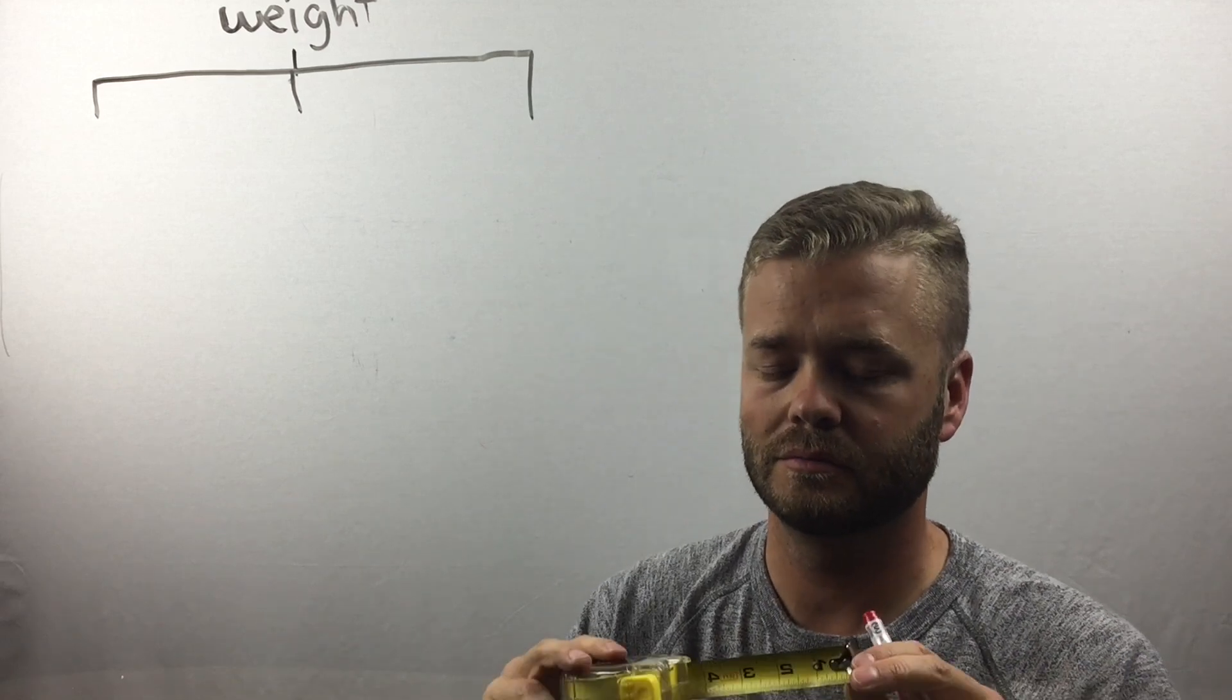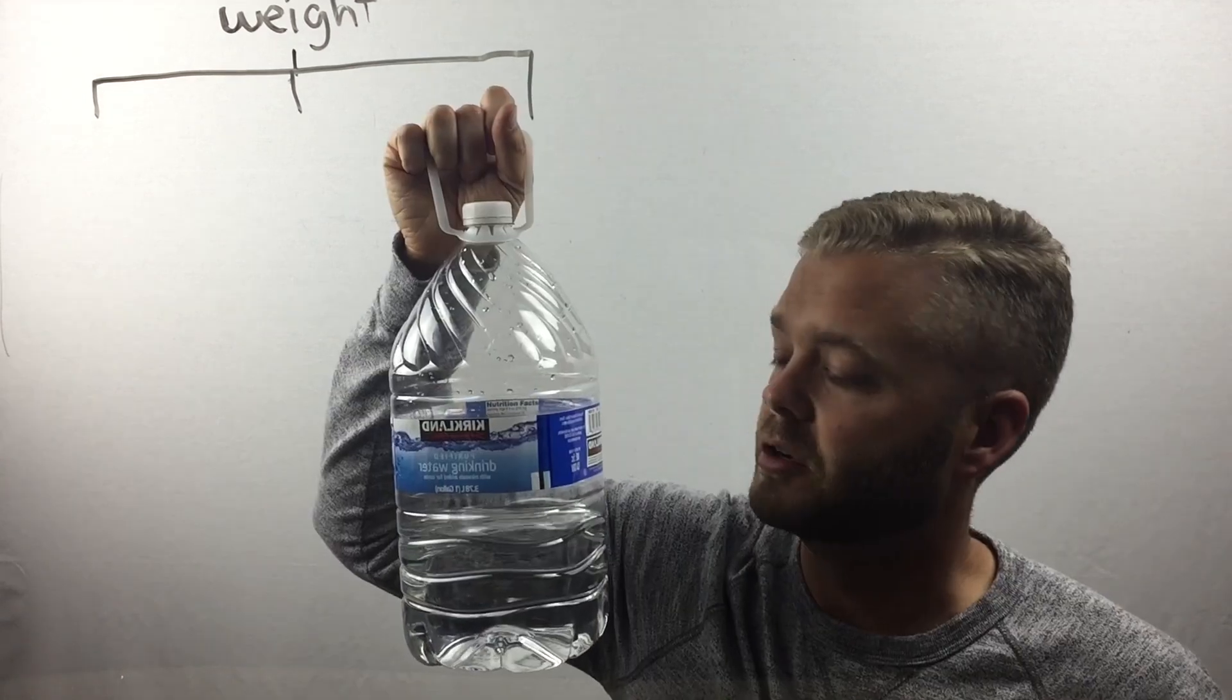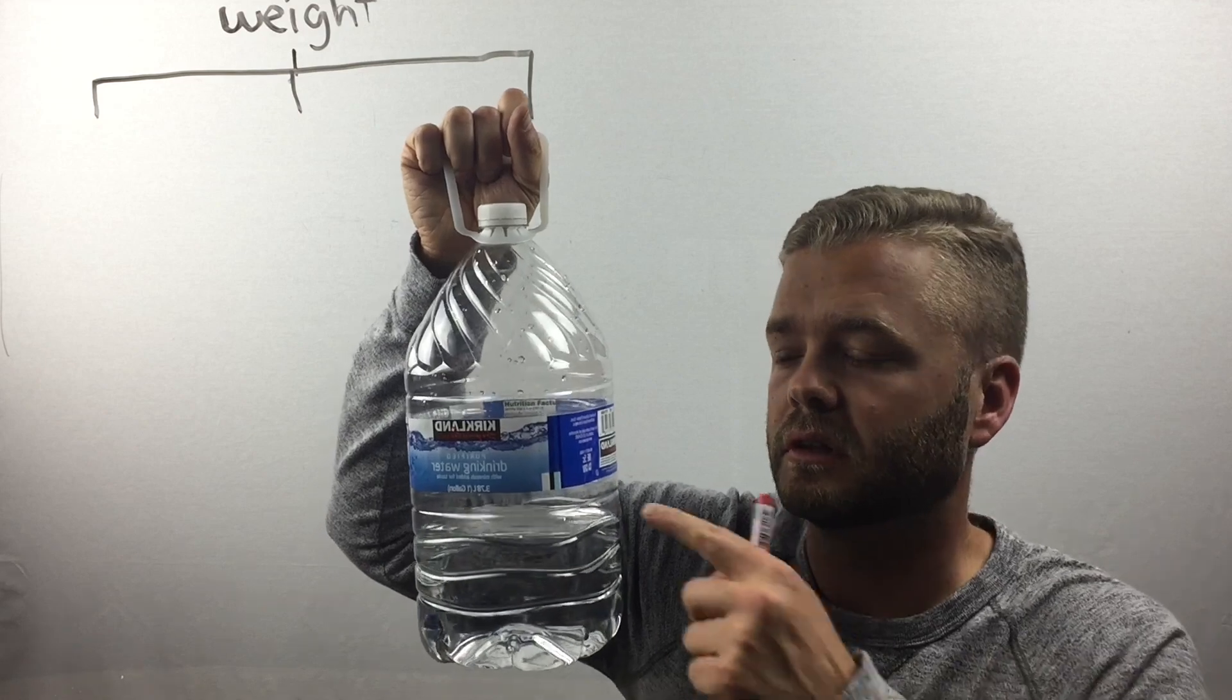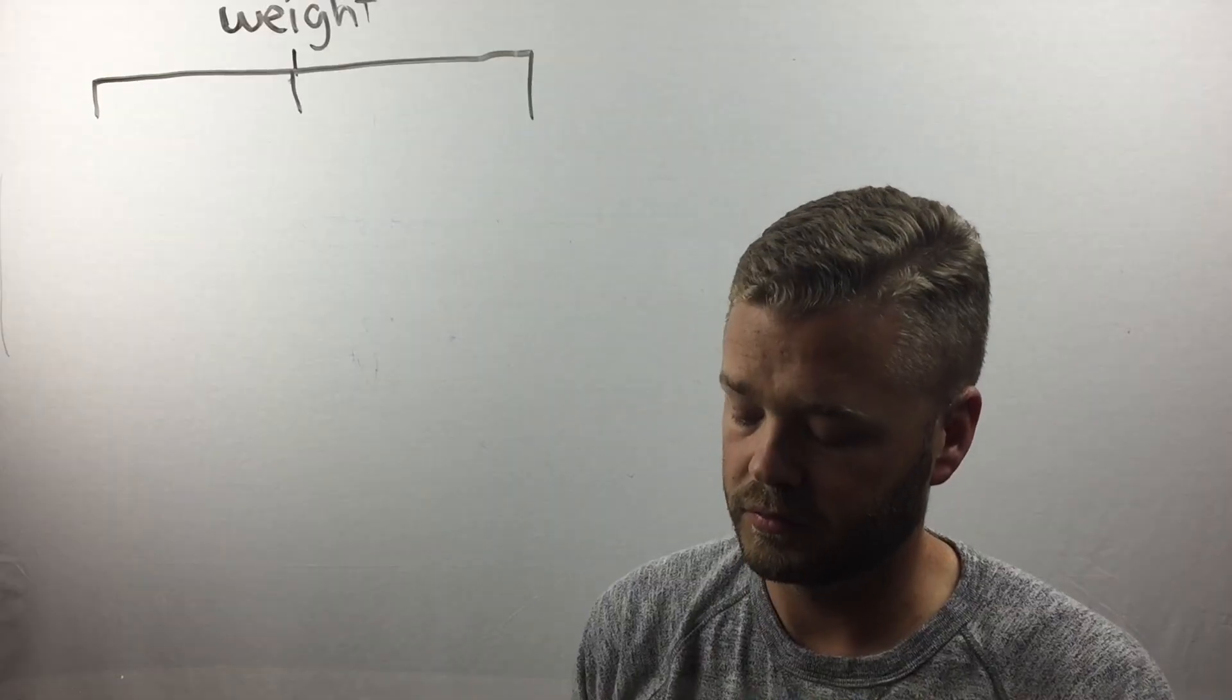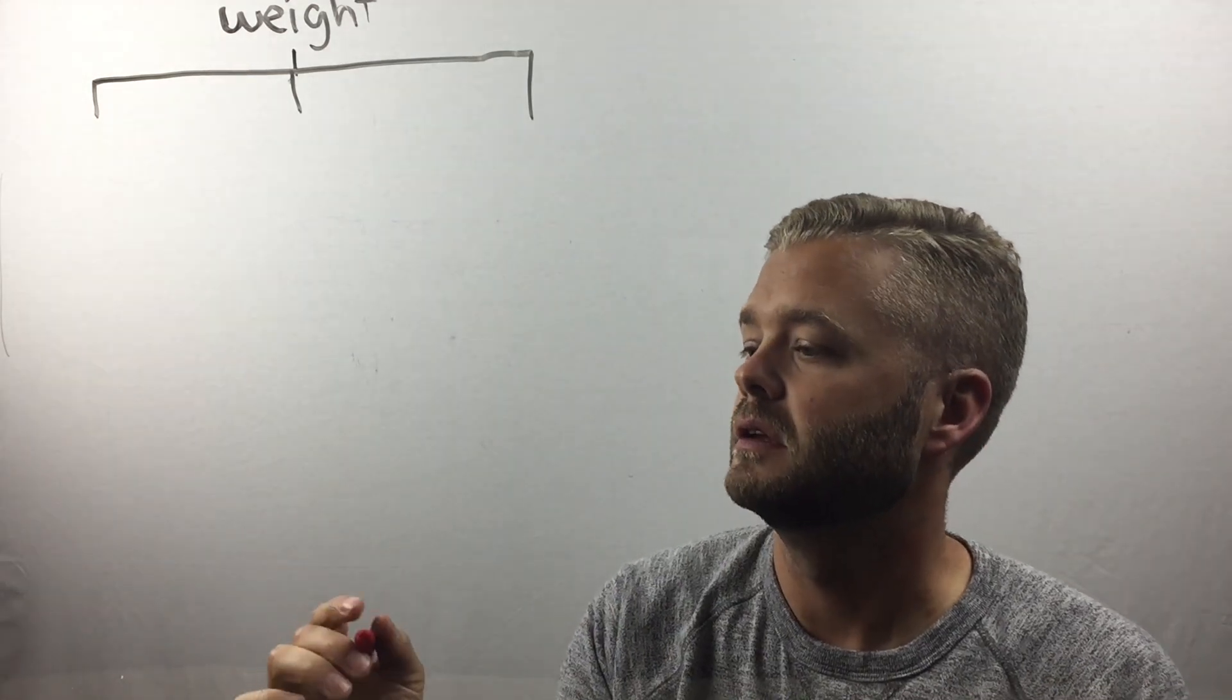When you're measuring length, you can use a ruler, tape measure. When you're measuring capacity, that's how much liquid is in something. You can use gallons, cups. But for weight, what we use is called a scale.